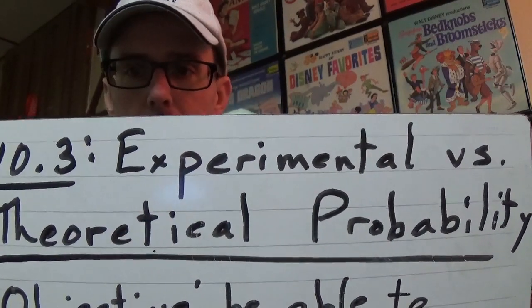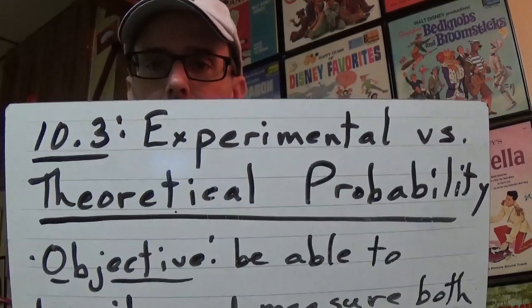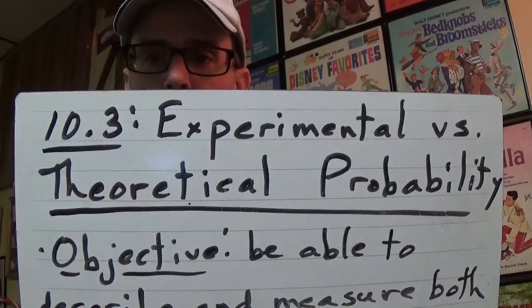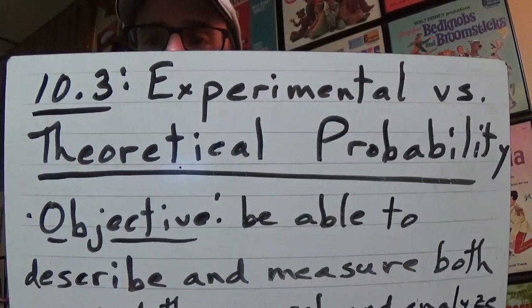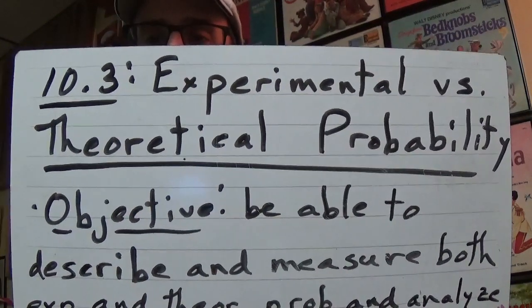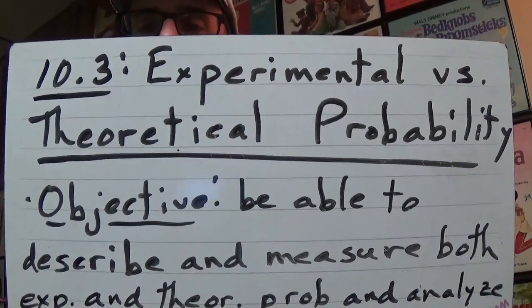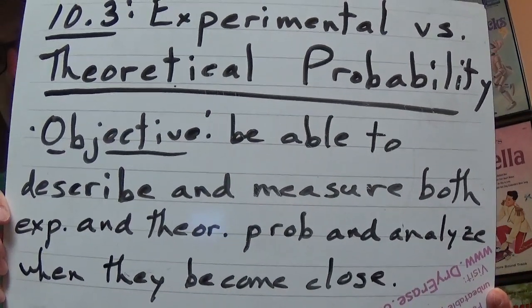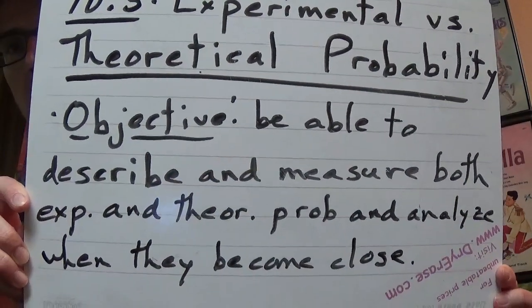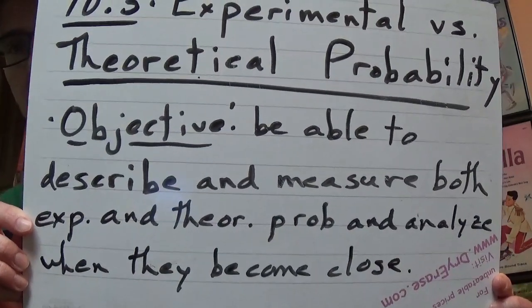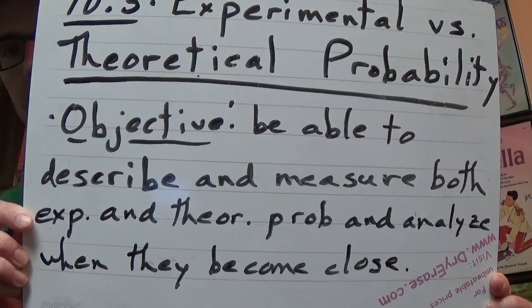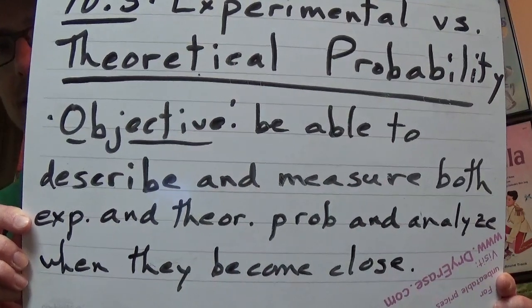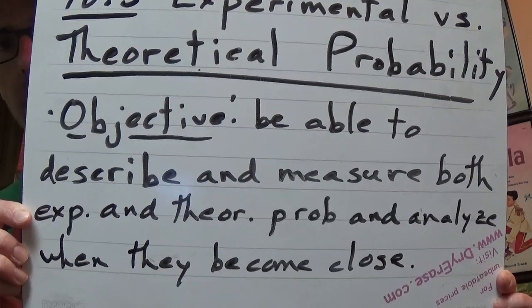If you need to run and go get your notebook, any old notebook will do - if it's your math notebook, great; if not, just earmark it as your math notes. When we return on May the first, you might need to transfer some of these e-learning notes into your math notebook. Here's our objective - pause the video and write this down: be able to describe and measure both experimental and theoretical probability, and analyze when they become closer.